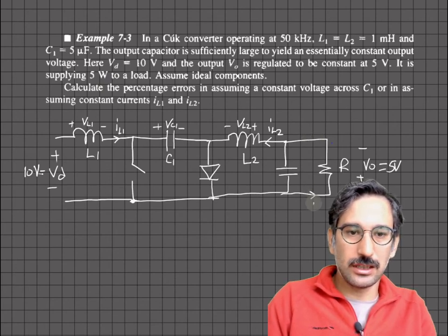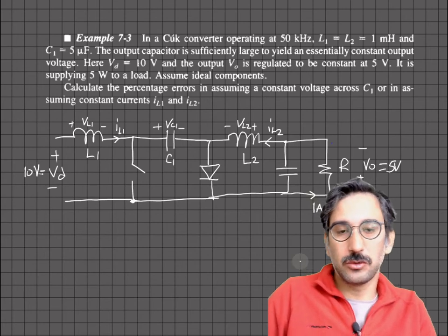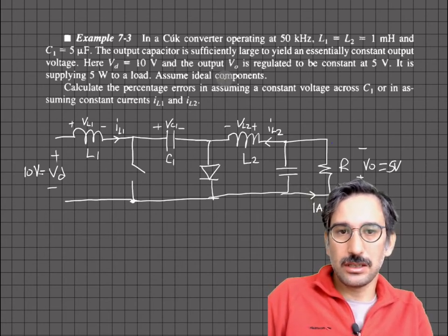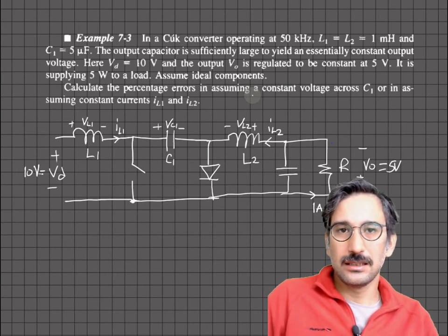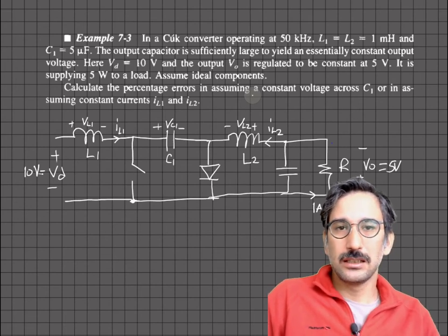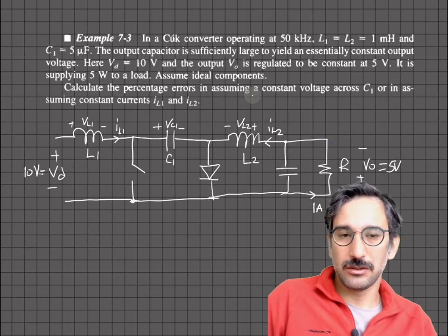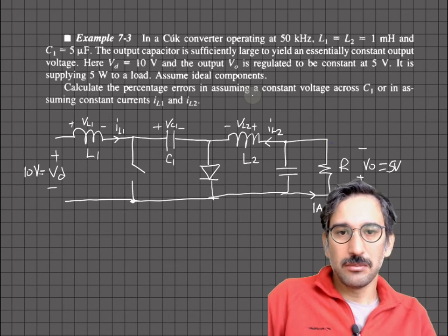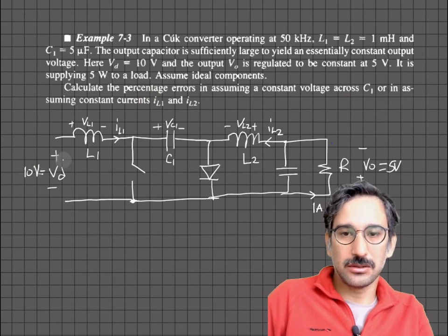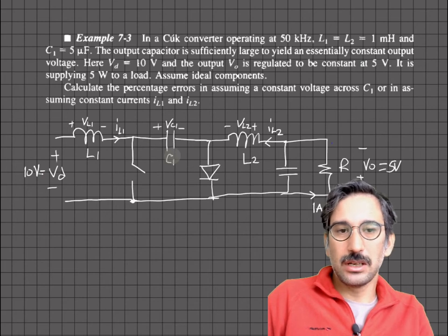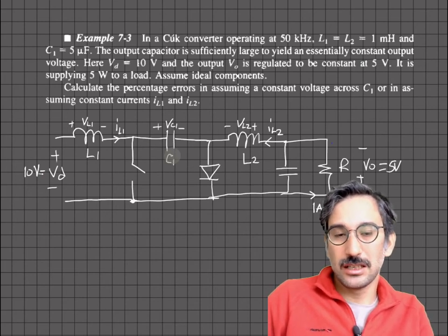The average output current is 1 amp. We are assuming ideal components. This is not a design question, but we'd like to see how accurate our assumptions are. In the analysis of the Cuk converter we assumed the voltage across C1 does not change because it is quite large.